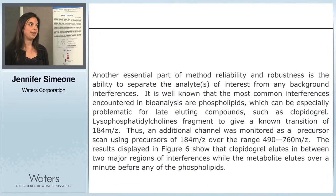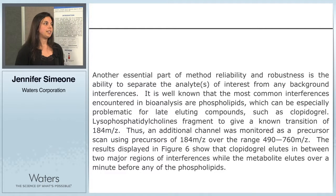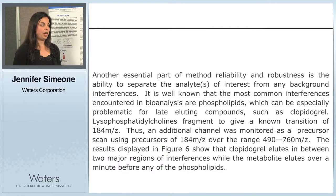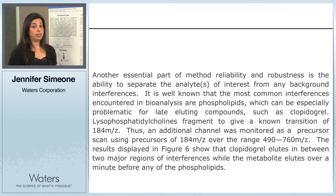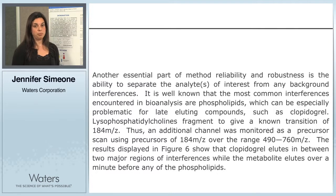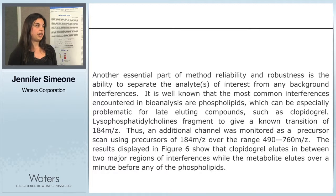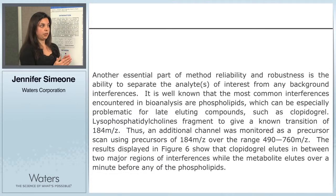Another essential part of assay reliability and robustness is the ability to separate your compounds of interest from coeluting matrix interferences. These can negatively impact your assay because coeluting species compete for ionization, causing suppression or general reproducibility issues. Within bioanalytical studies, one of the most common sources of these interferences is the phospholipids present in biological samples. There are two ways to address this: in the sample prep portion using a phospholipid capture plate, or in the LC by separating your compound from the eluting phospholipids.